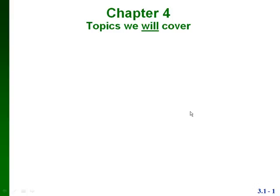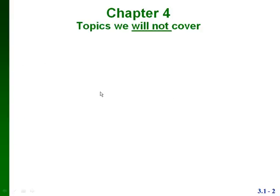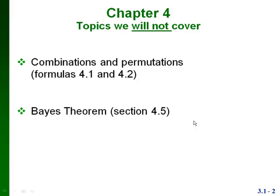The topics we will cover are all listed on screen. The topics we won't cover are combinations and permutations — those would be formulas 4.1 and 4.2 in your textbook, so please don't worry about learning those. The second topic we won't cover is Bayes' Theorem, which is all of Section 4.5. So basically we're only covering Sections 4.1 through 4.4 in this course.